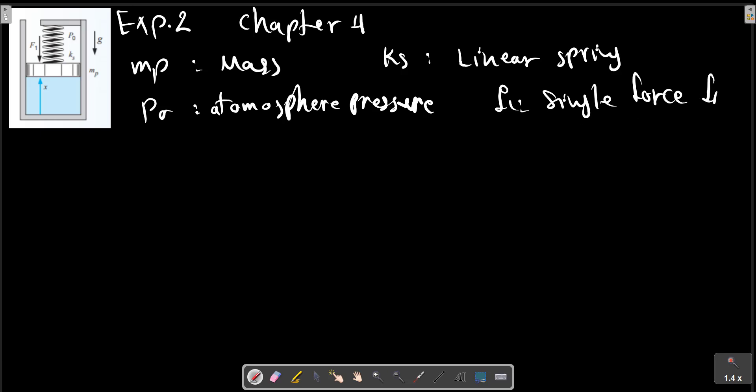Calculate the work done with this system if the piston goes from V1 to V2 in a quasi-equilibrium process. In the quasi-equilibrium process, we always have mp times g over A.